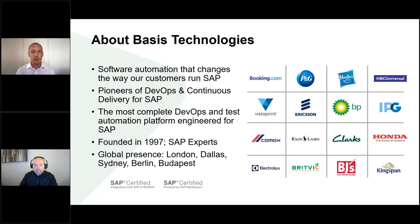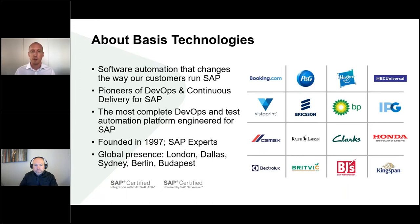A quick introduction to Basis Technologies: we're a company that makes software automation to help our customers change the way they manage, adapt, and maintain their SAP systems by bringing concepts like agile development, DevOps, and CI/CD into those environments through software automation products specifically designed for SAP. We've been around for nearly 25 years, SAP is all we do, and we've got offices around the globe supporting customers worldwide.